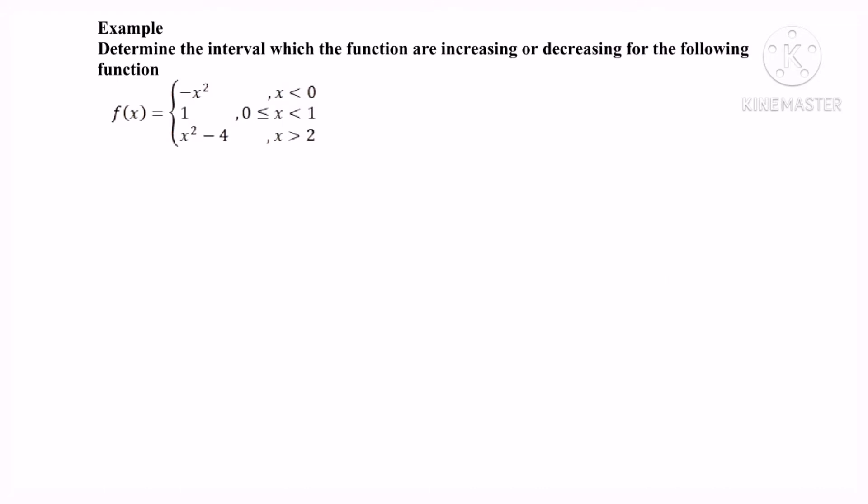Hello everyone. Given the example, determine the interval in which the function is increasing or decreasing. We have a piecewise function with three pieces: negative x squared, 1, and x squared minus 4. Step one: identify the equations. Step two: find the first derivative.